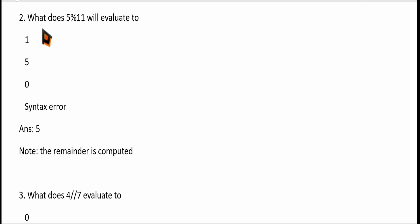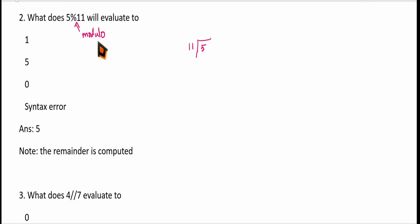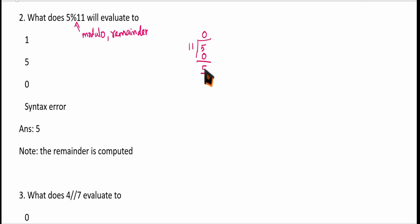The second question: what does 5%11 evaluate to? Even though this is a percentage symbol, here it acts as the modulo operator, which gives the remainder of the division. For 5 divided by 11, the quotient is 0, so the remainder is 5. The correct answer is 5.